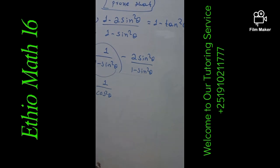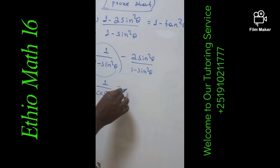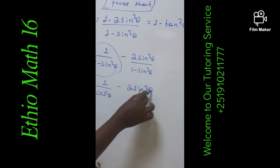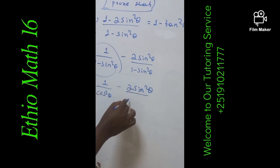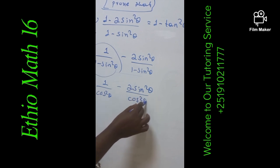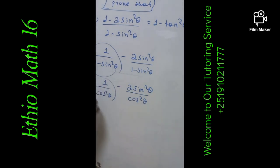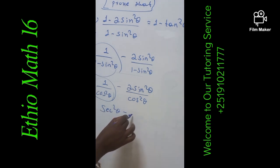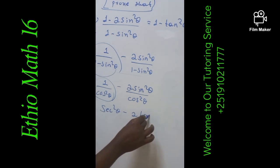So from this trigonometric identity, you can immediately prove that 1 over (1 minus sin²θ) is 1 over cos²θ. And this gives us 2sin²θ over cos²θ, which is perfectly equal to sec²θ minus 2tan²θ.